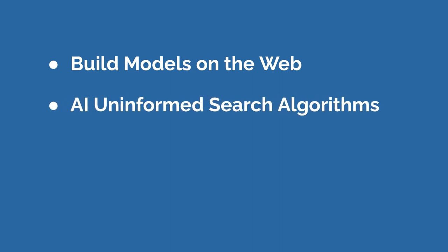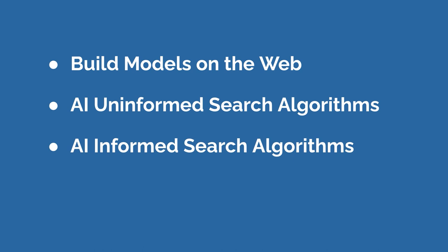We're going to jump into a section about artificial intelligence uninformed search algorithms. We're going to learn how artificial intelligence agents perform search. We'll cover topics like depth-first search, breadth-first search, depth-limited search, uniform-cost search, and much more. After that, we're going to look at artificial intelligence informed search algorithms, covering algorithms like greedy best-first search and A-star search, commonly used by games.